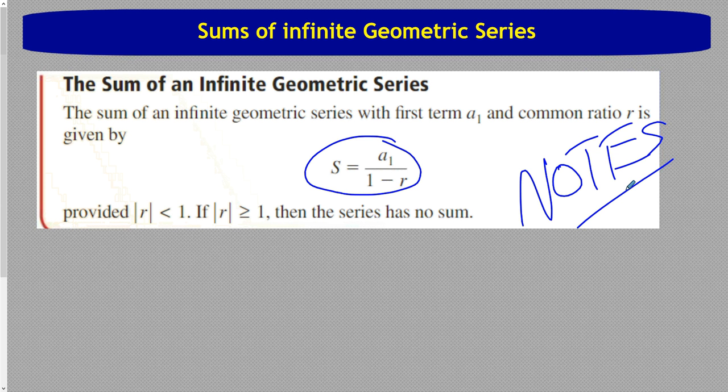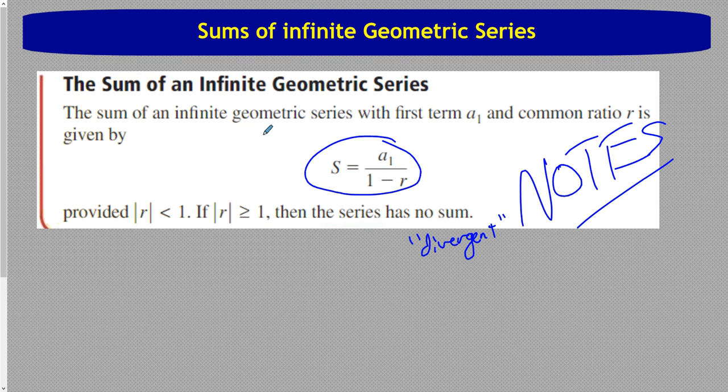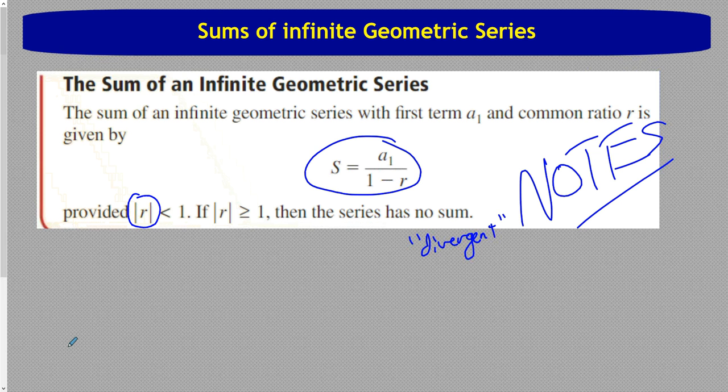This only works if the absolute value of our common ratio is less than one. If the absolute value of the ratio is greater than one, meaning like negative two or positive seven, then it's going to have no sum and it would be divergent or diverging, meaning it's just taking off, just exploding to either positive or negative infinity. But if the absolute value of r is less than one, then it will converge.